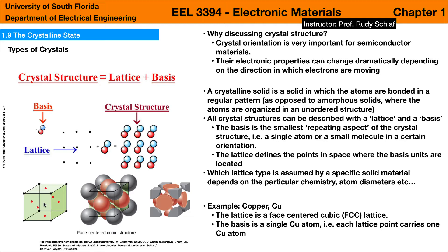A straightforward example is copper. Copper makes an FCC lattice — face-centered cubic — so we have a cubic structure with one atom on each corner of a cube, and then each face also carries one atom. In this case we have a face-centered cubic lattice and the basis is a single copper atom.